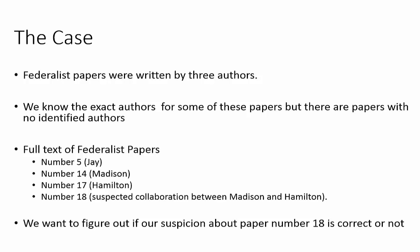We know for a fact that paper number 5 was written by Jay, paper number 14 was written by Madison, paper number 17 was written by Hamilton. But historians have some suspicions about paper number 18 — they suspect that paper number 18 is a collaboration between Madison and Hamilton. We want to see if we can help them by providing some analysis to correctly identify paper number 18, whether it's a collaboration or something else.